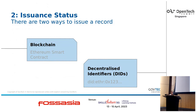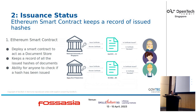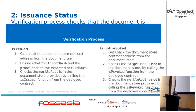We have two ways to verify issuance. The first is via a smart contract — the issuer deploys a smart contract acting as a document store, which keeps a record of issued document hashes. This involves an on-chain transaction and does consume gas. During verification, we check that the target hash is in the document store's list of issued hashes, and also that it's not in the list of revoked hashes.